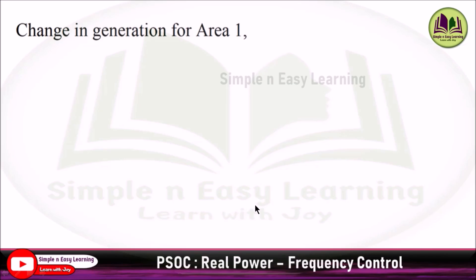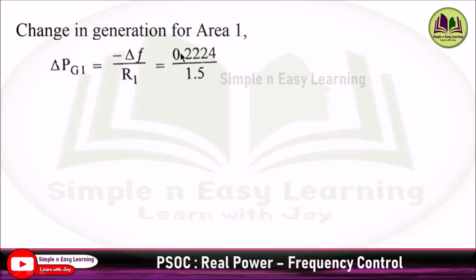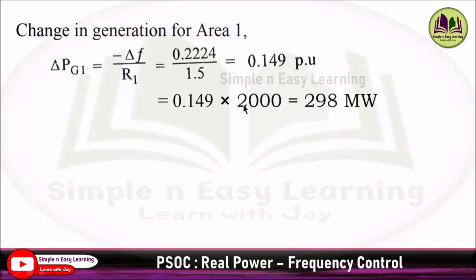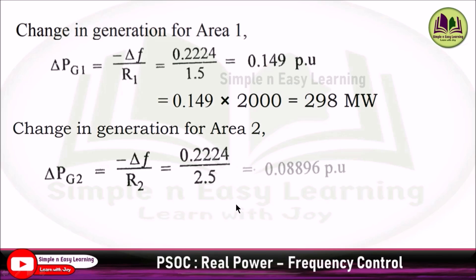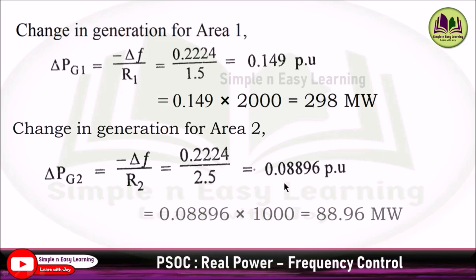Due to the frequency change, there is a change in generation in each area. For area 1: ΔPg1 = −ΔF/R1 = 0.2224/1.5 = 0.149 pu = 298 MW. For area 2: ΔPg2 = −ΔF/R2, giving 0.08896 pu = 88.96 MW.